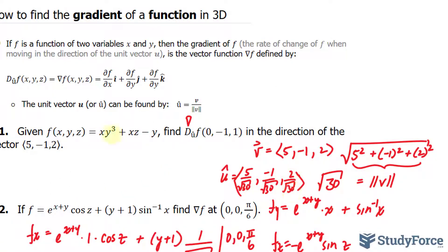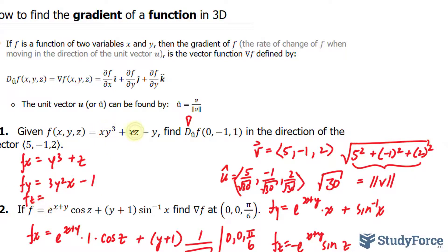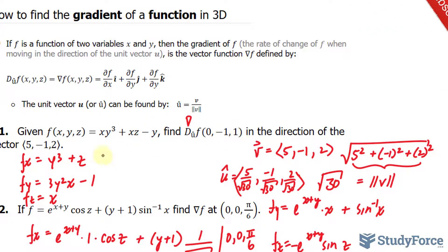Now we find the partial derivatives. f sub x gives y cubed times z, and the rest is 0. f sub y gives 3y squared times x, plus 0, minus 1. f sub z gives 0 plus x, and that becomes 0. Evaluating at (0, negative 1, 1): f sub x gives 0, f sub y gives 0 minus 1 which is negative 1, and f sub z gives 0. So the gradient at the point is (0, negative 1, 0).